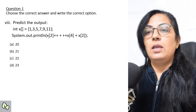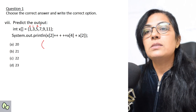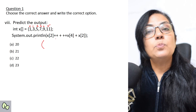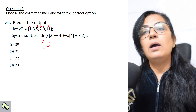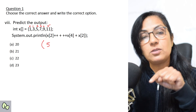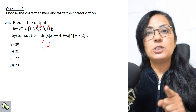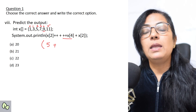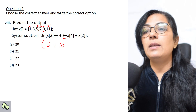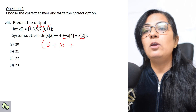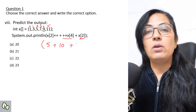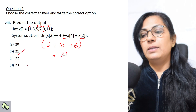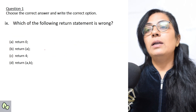Predict the output: int[] x = {1,3,5,7,9,11}; print(x[2]++ + ++x[4] + x[2]). x[2] is 5 — post-increment uses 5 then increments to 6. x[4] is 9 — pre-increment makes it 10 first. x[2] is now 6 after the post-increment. So the expression is 5 + 10 + 6 = 21. The correct answer is 21.